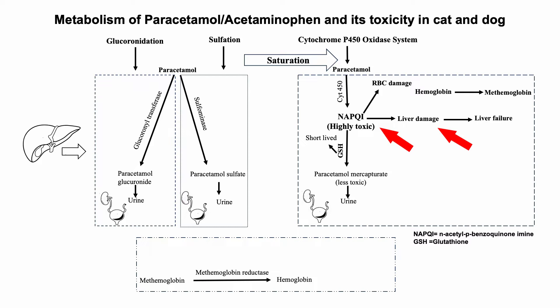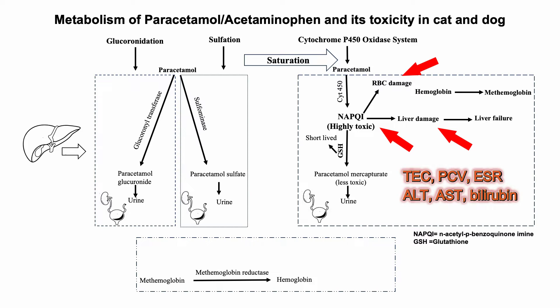Liver damage clinically manifests as nausea, vomiting, abdominal pain, and ultimately death due to acute liver failure. Due to oxidative damage of RBCs along with liver damage, changes in biochemical parameters such as TEC, PCV, ESR, ALT, AST, and total bilirubin are also observed.